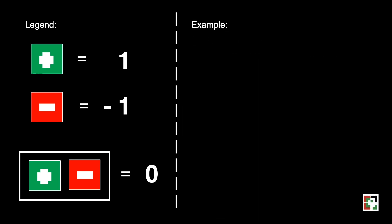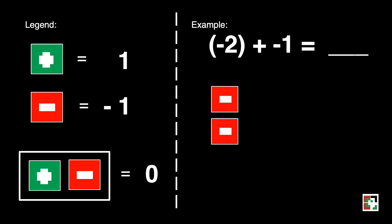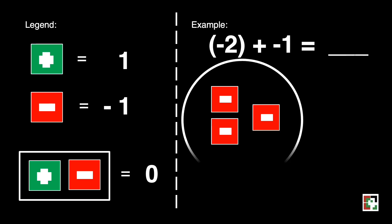Another example: negative 2 plus negative 1. Negative 2 is represented by 2 red squares, and negative 1 is represented by 1 red square. If you're going to add that, that will be 3 red squares, or negative 3. It's so simple, right?